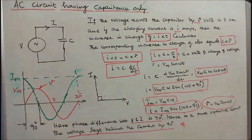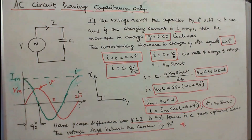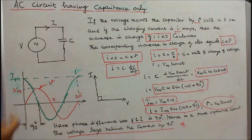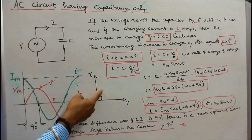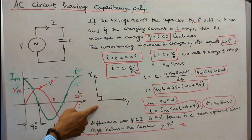Here the green waveform is the current and the red is the voltage. The phase difference between voltage and current is 90 degrees. Hence in a pure capacitive circuit, the voltage lags behind the current by 90 degrees.